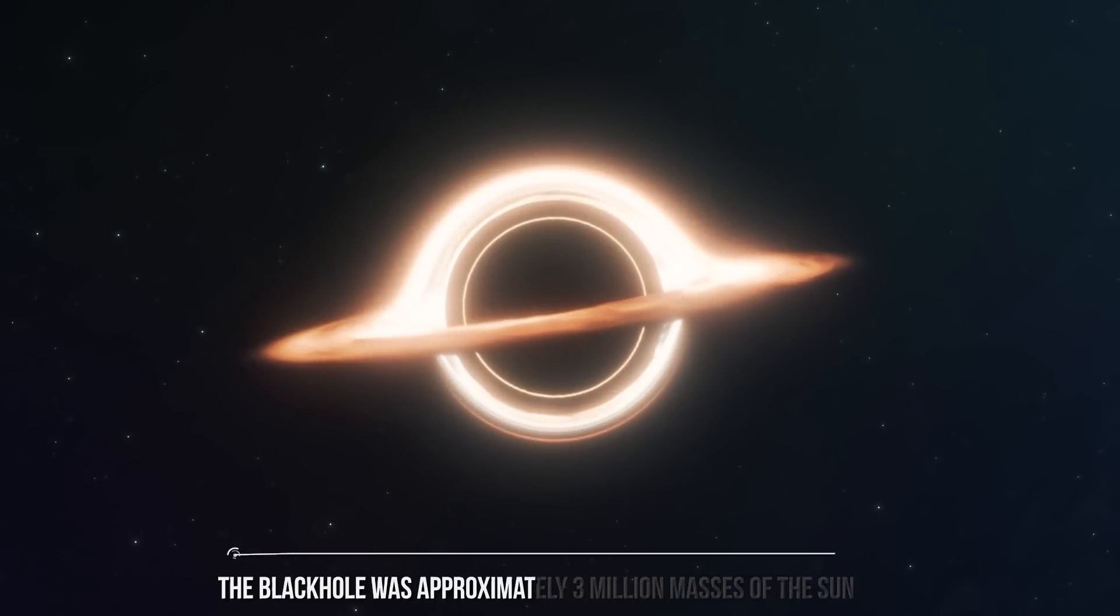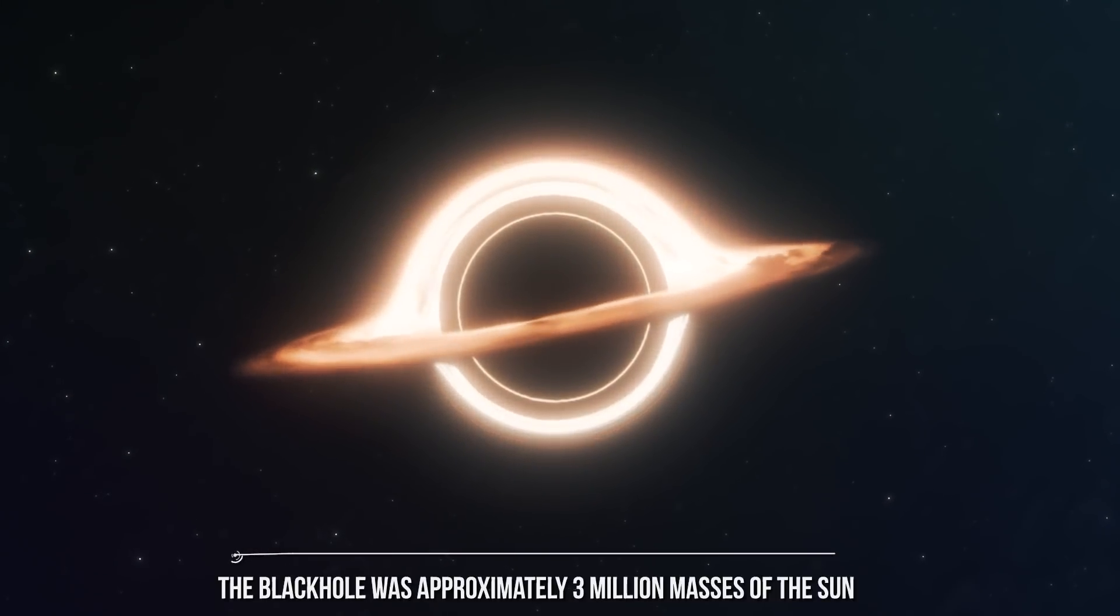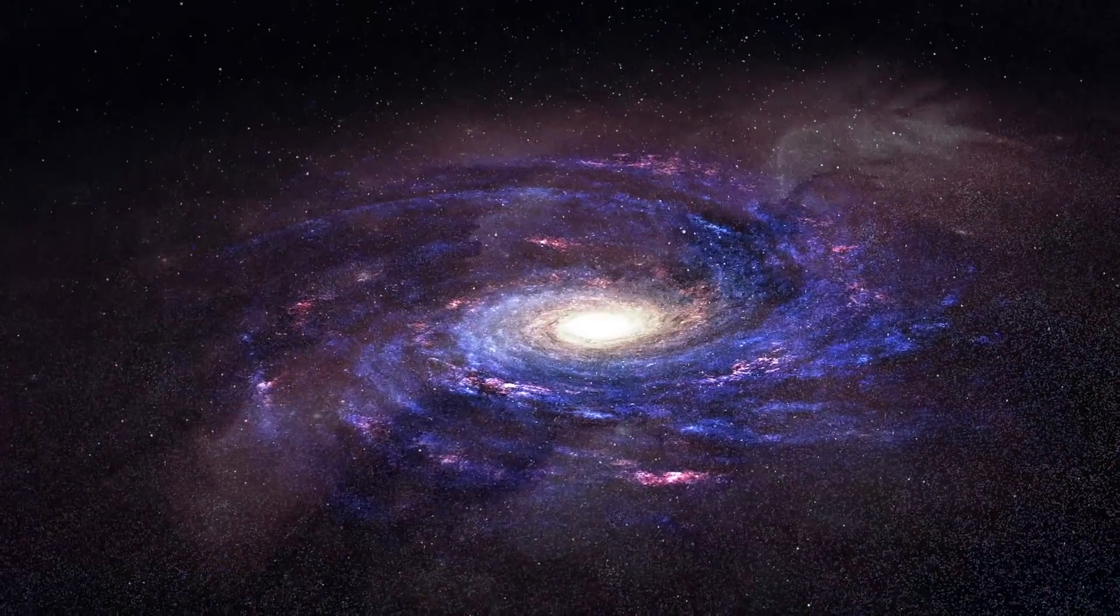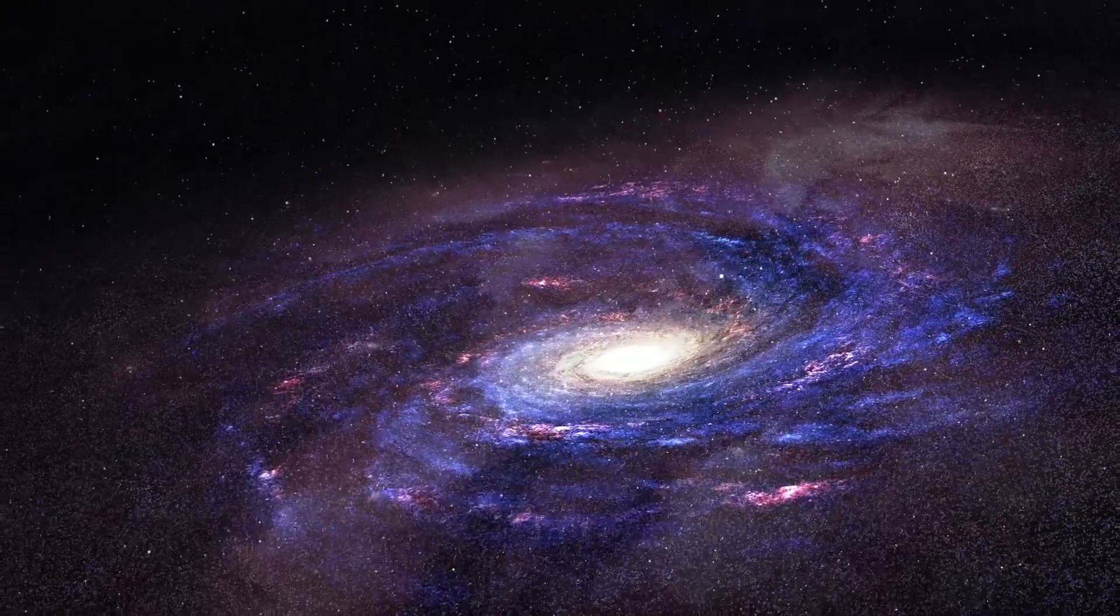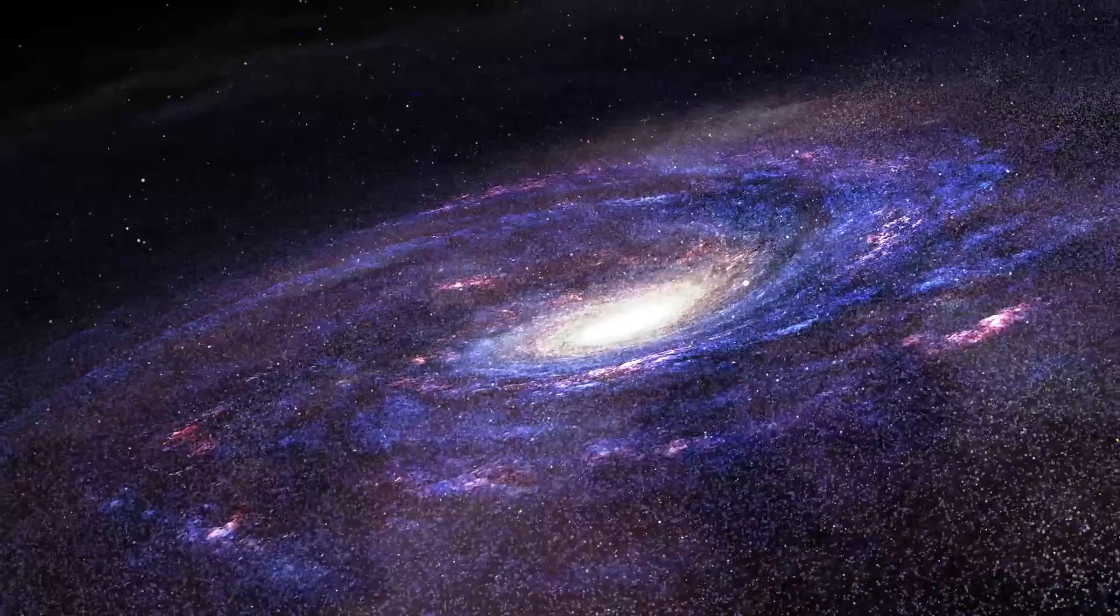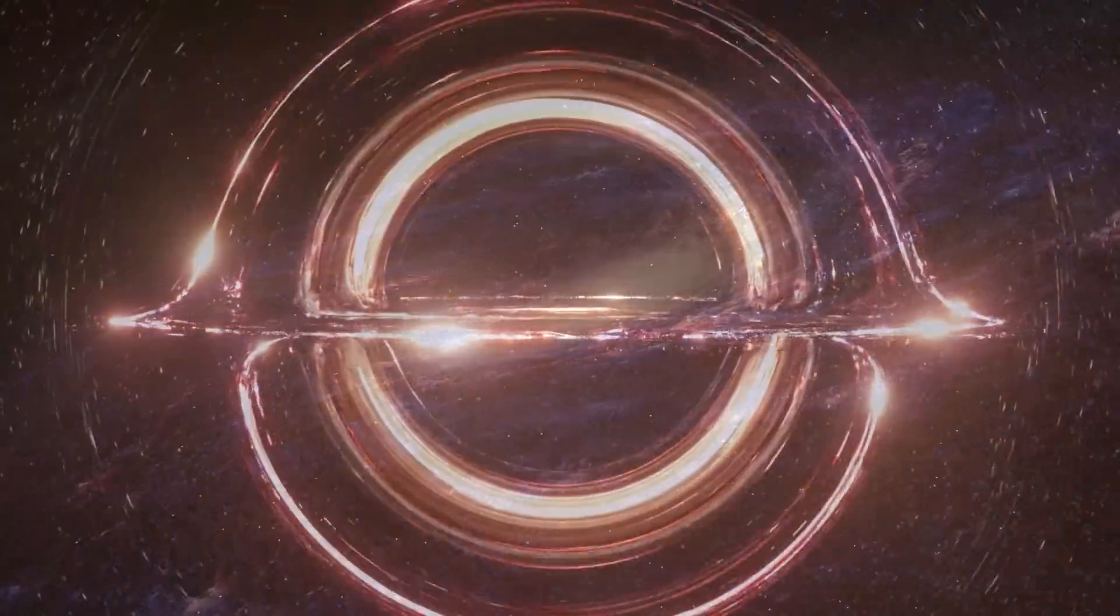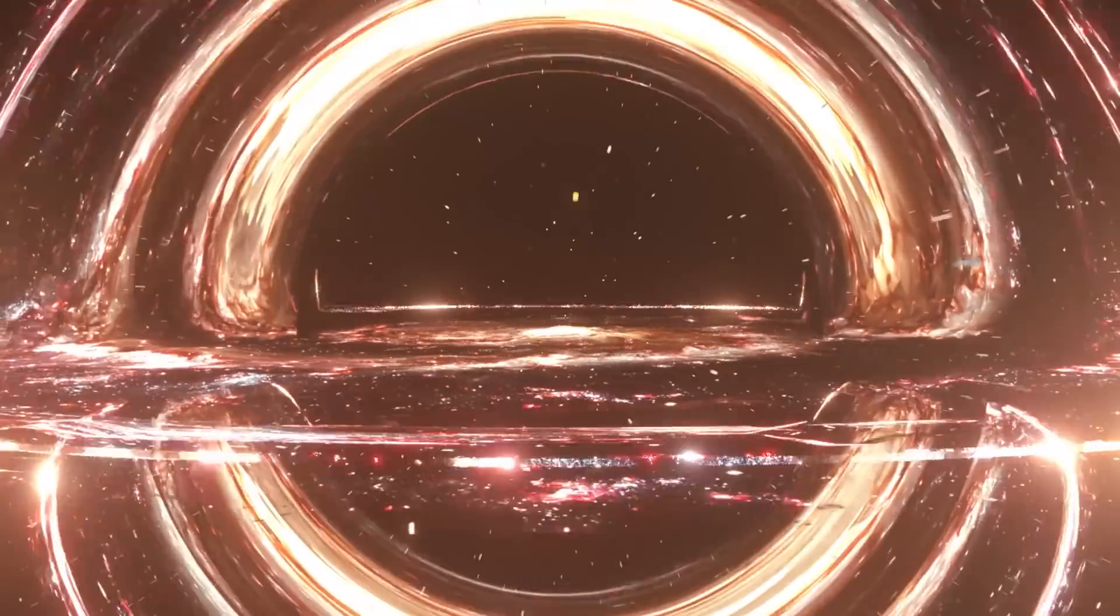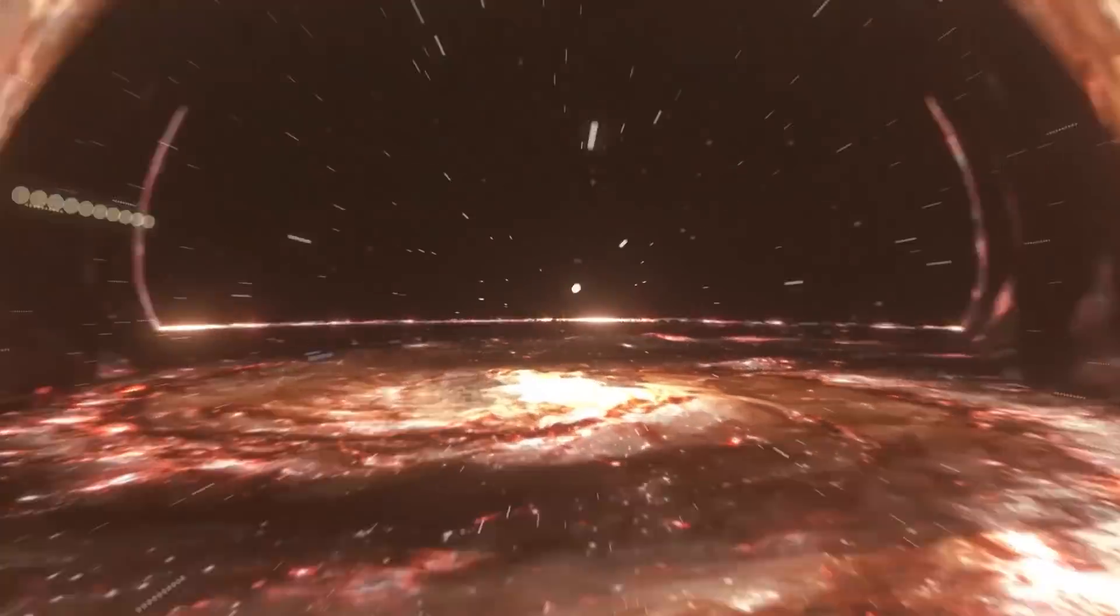The black hole was approximately 3 million masses of the Sun, which is surprisingly massive for such a small galaxy. It is somewhat similar in mass to the black hole in the center of our Milky Way, even though the Milky Way possesses approximately 10 times more stars. But of course, this is an exception, not the rule. We don't anticipate such big black holes to exist within these galaxies. So this is already quite a big mystery.